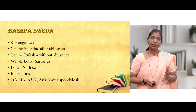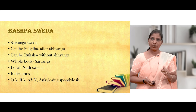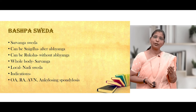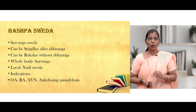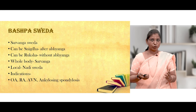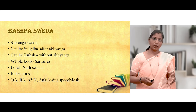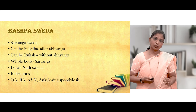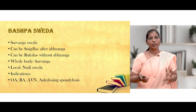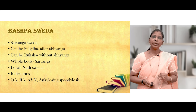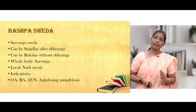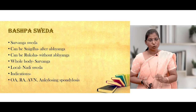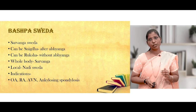Bashpa Sveda is a Sarvanga type that can be divided into Snigdha and Ruksha. After Abhyanga it is called Snigdha Sveda; without Abhyanga it is Ruksha Sveda. It is used before Panchakarma procedures like Vamana and Virechana. As a therapeutic use, it is indicated in Osteoarthritis, Rheumatoid Arthritis, Avascular Necrosis of the Head of the Femur, and Ankylosing Spondylosis.